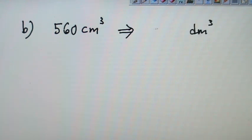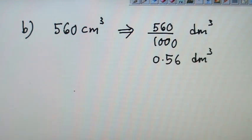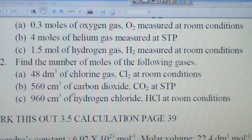How about B? B, they gave us 560 cm³. We need to convert it to dm³. How do we convert it to dm³? We divide by 1,000. So 560 divided by 1,000. That would give you a figure of 0.56 dm³. Then, what condition? The condition is STP. You can check here. 560 cm³ of carbon dioxide, CO₂ at STP.